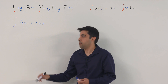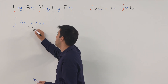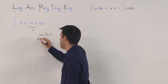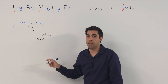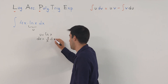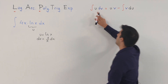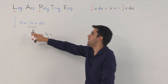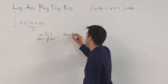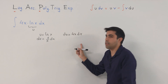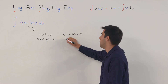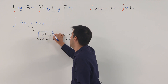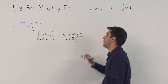In this case, we have a polynomial 4x and a logarithmic function ln(x). Because L comes before P, we need to call the logarithmic function u. So u is ln(x), and du equals 1 over x dx. Because we are looking to solve the integral of u dv, that means 4x dx is our dv. Integrating both sides, we obtain v as 2x squared.